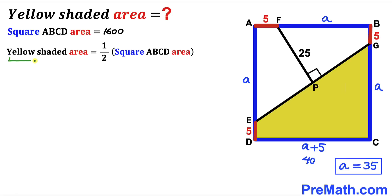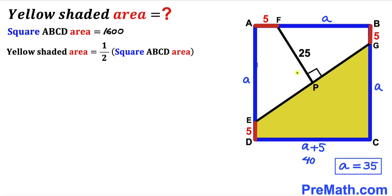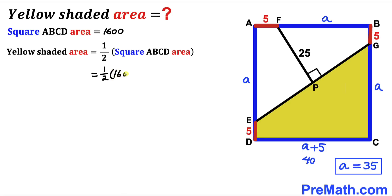Now let's make an observation: the yellow shaded area is going to be equal to half of the square ABCD's area. In other words, the yellow shaded area equals the white area because of symmetry. We know the area of square ABCD is 1600, so the yellow shaded area = (1/2) × 1600 = 800 square units.